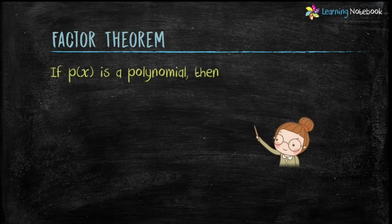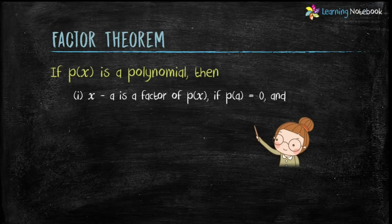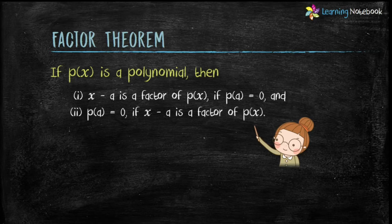If P(x) is a polynomial, then: first, x minus a is a factor of P(x) if P(a) equals 0; and second, P(a) equals 0 if x minus a is a factor of P(x).